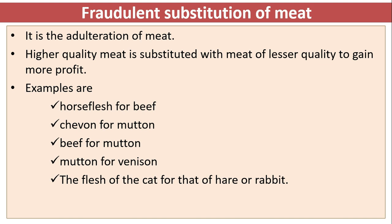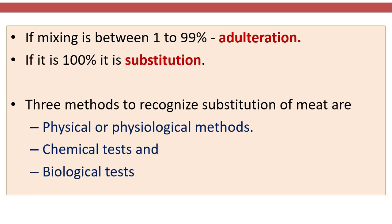Examples of substitution include horse flesh for beef, chevon for mutton, beef for mutton, mutton for venison, and the flesh of cat for that of ham or rabbit. If mixing is between 1 to 99 percent, it is known as adulteration. If it is 100 percent, it is called substitution.